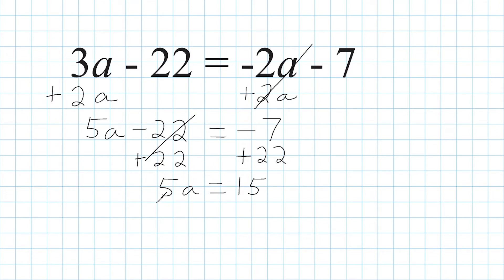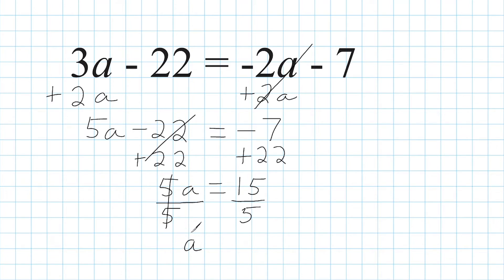But let's complete our work by doing the inverse of multiplying by 5, which is to divide by 5. We balance our equation by dividing the other side by 5 as well. On the left-hand side, 5 divided by 5 leaves us with positive 1, so we have positive 1a. And we don't have to write a 1 because 1 times anything is that thing — 1 times a is just a. On the right-hand side, 15 divided by 5 is 3. So for this equation, a equals 3.